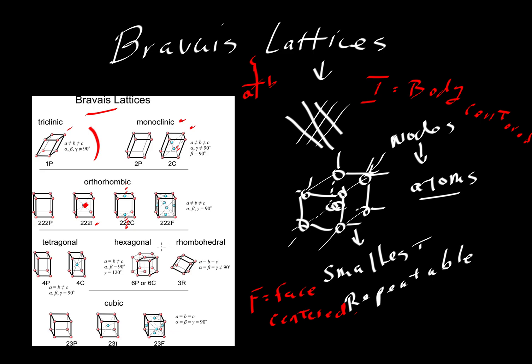So every natural crystal, anything that you might find in nature or even make in the lab, if it's a crystalline structure with long-range atomic order, we can break it down into one of these 14 Bravais lattices.